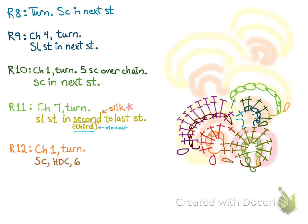For row twelve, chain one and turn. Then single crochet, half double crochet, six double crochet, half double crochet, and single crochet. Slip stitch into the next stitch.